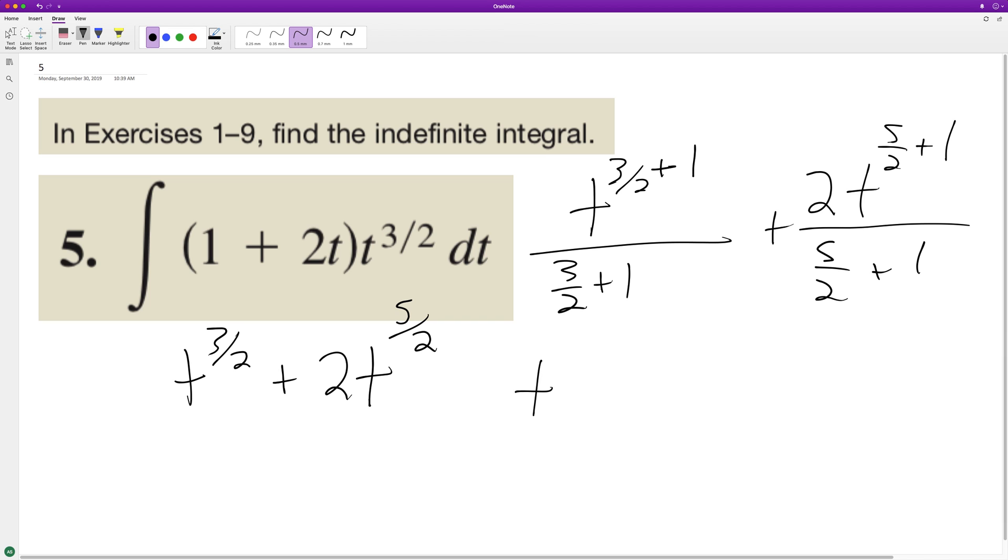So we end up with t raised to the five halves over five halves, plus two t raised to the seven halves over seven halves.